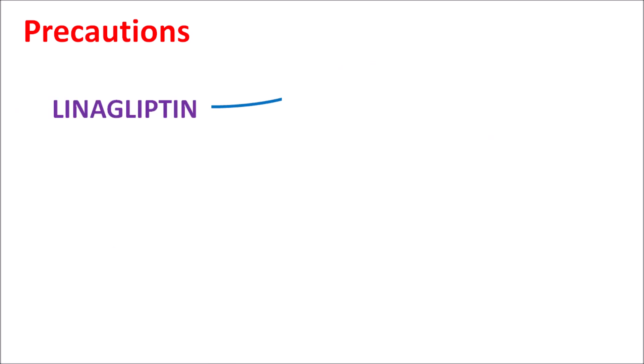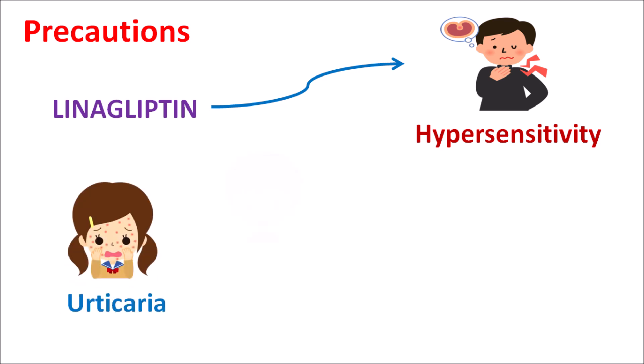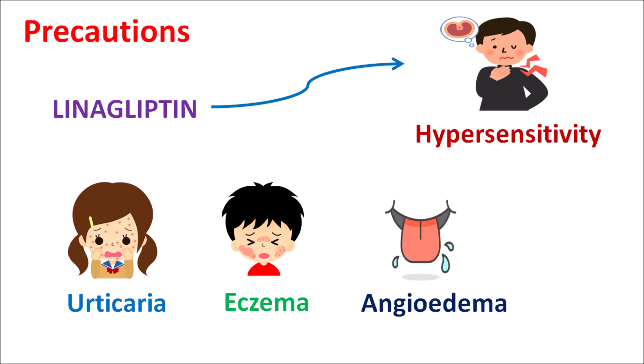Another important precaution is that linagliptin can produce hypersensitivity reactions. These effects may be observed in only a few people, but care should be taken. If any hypersensitivity reactions develop towards linagliptin, the use of this drug should not be continued. Symptoms such as urticaria, eczema, skin rashes, and angioedema resulting in swelling of the lips, tongue, or pharynx — if any of these symptoms are observed, the drug should be immediately stopped due to the risk of fatal hypersensitivity reactions.